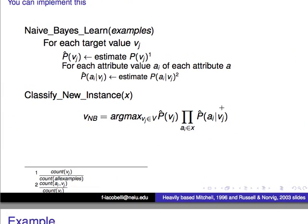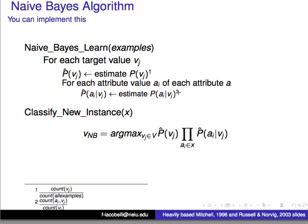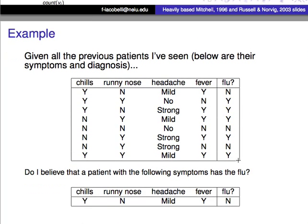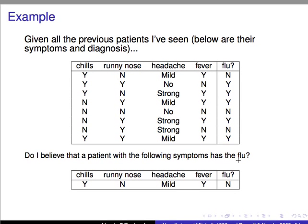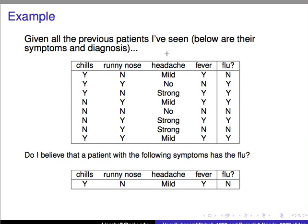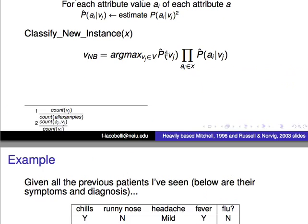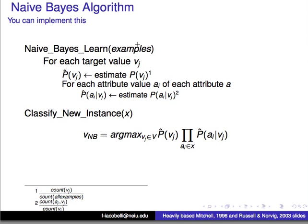By the way, this is how you train. Then the way you classify is you compute the argmax of the Naive Bayes equation, because you will have all the estimated values. So just plug in the values and see which v_j gives you the highest result.